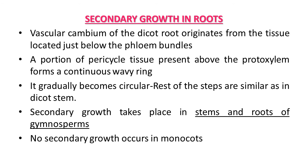Secondary growth in roots: We now have a clear idea that secondary growth is due to secondary meristematic tissue, which increases the girth of the plant. Vascular cambium of the dicot root originates from tissue located just below the phloem bundle and portions of pericycle tissue — the pericycle being present above the protoxylem. It forms a continuous wavy ring that gradually becomes circular, and the rest of the mechanism is similar to that in dicot stem. Secondary growth takes place in the stem and root of gymnosperm plants.